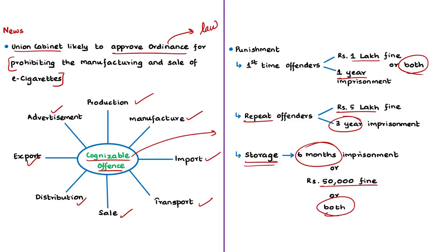The tobacco industry and its allies state that if this law is enforced, it would be a draconian law — meaning excessively harsh and severe — hitting at the livelihood of many. They argue many people are dependent on the production, manufacture, import, export, transport, sale, distribution and advertisement of e-cigarettes. If this law is passed, they might have to look for other jobs. So what is the background behind this ban?